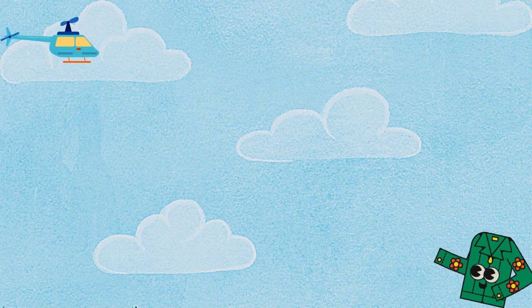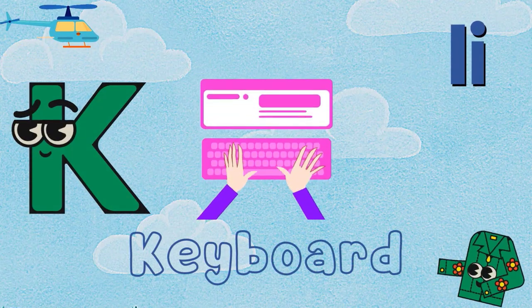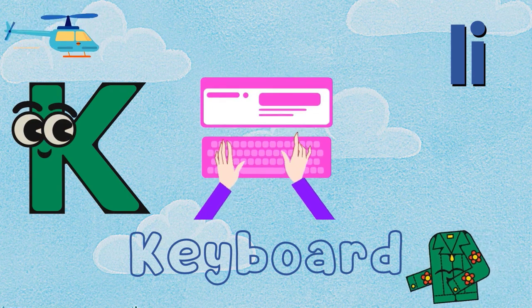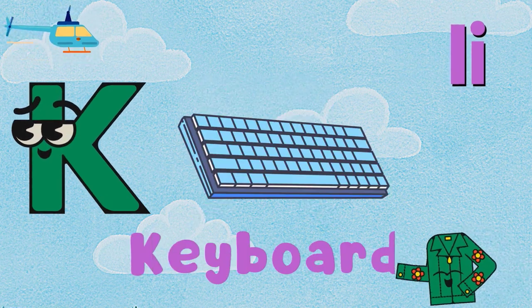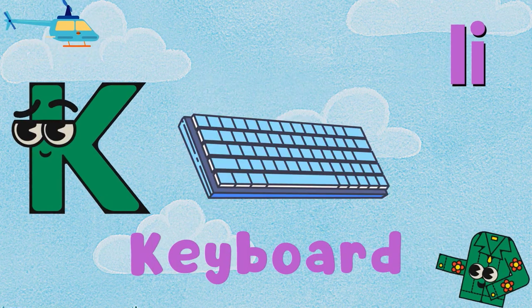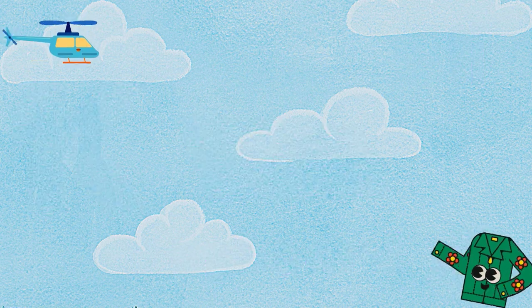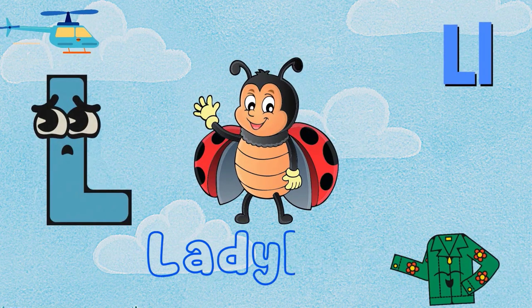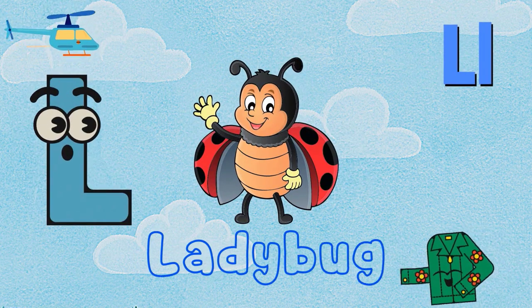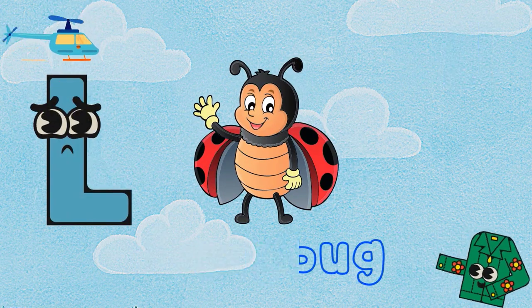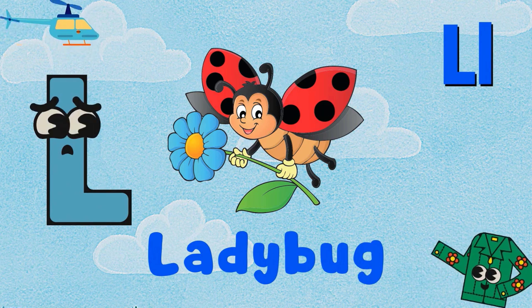K is for Keyboard. K-K-Keyboard, K-K-Keyboard, K. L is for Ladybug. U-U-Ladybug, U-U-Ladybug, U-U-Ladybug, L.